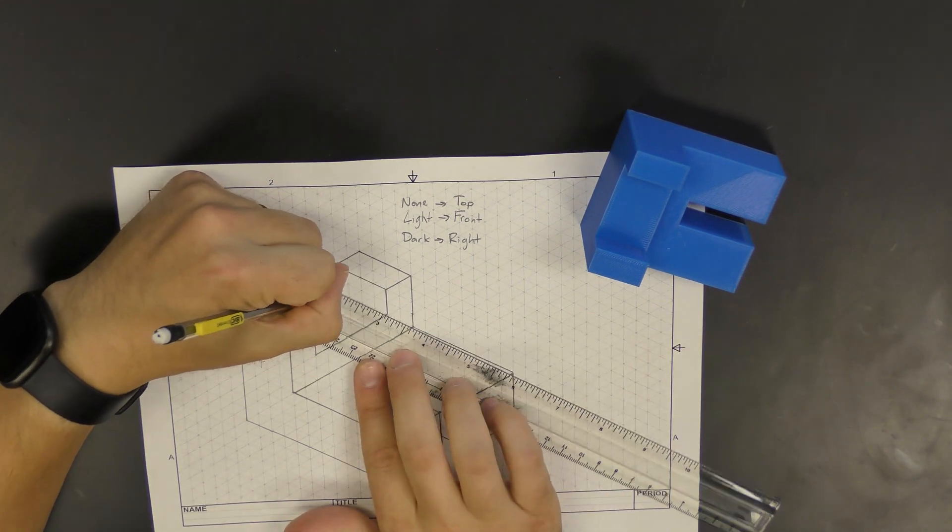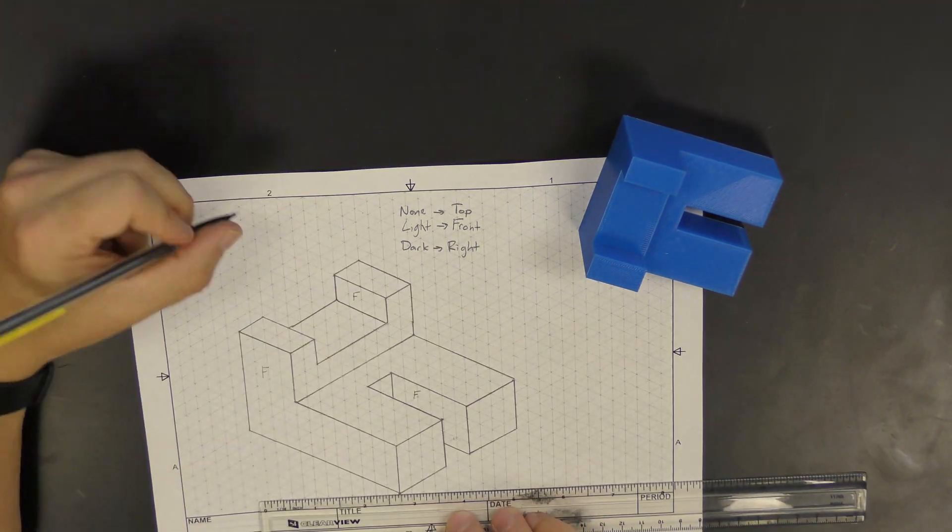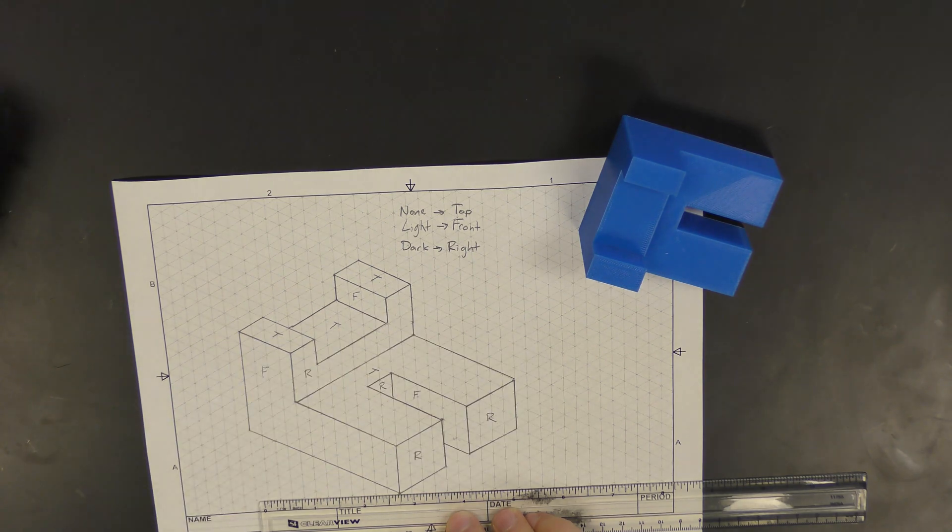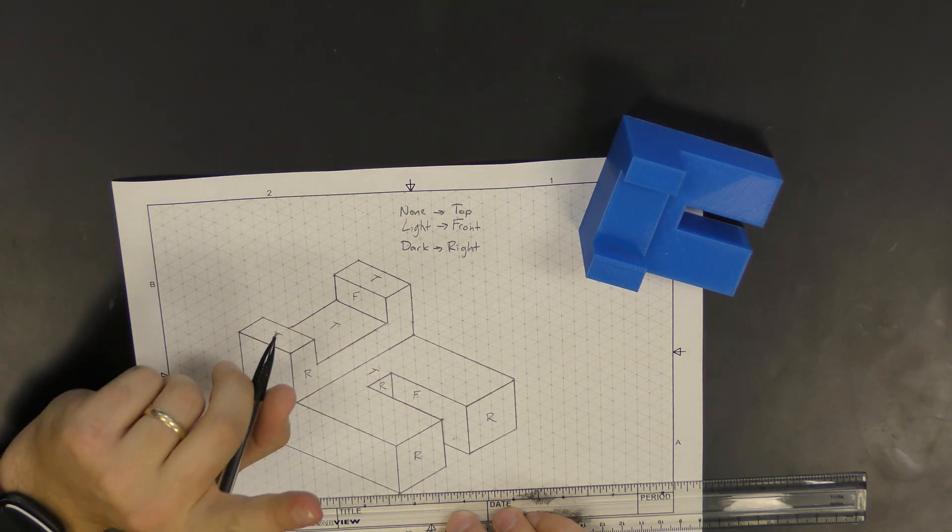In this next part, I'm labeling each of my faces with an F, T, or R to identify whether they're the front, right, or top view so I know what type of shading to apply. And I definitely didn't forget a line that I missed earlier.